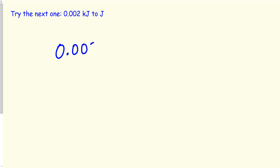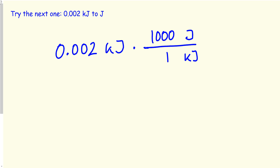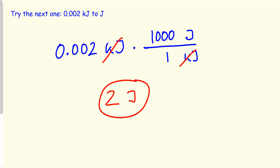Now we have 0.002 kilojoules. Some of you might get scared by decimals, but the process is exactly the same. Since you're solving for joules, joules goes at the top and kilojoules at the bottom. The conversion factor doesn't change. Multiply 0.002 by 1,000 — use your calculator if you're confused. We're human beings and it's easy to make mistakes, so always double check your answer.